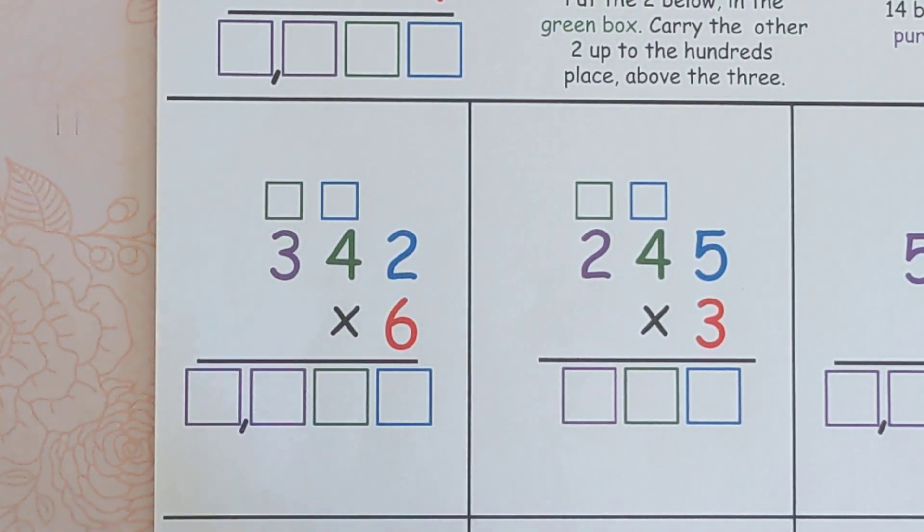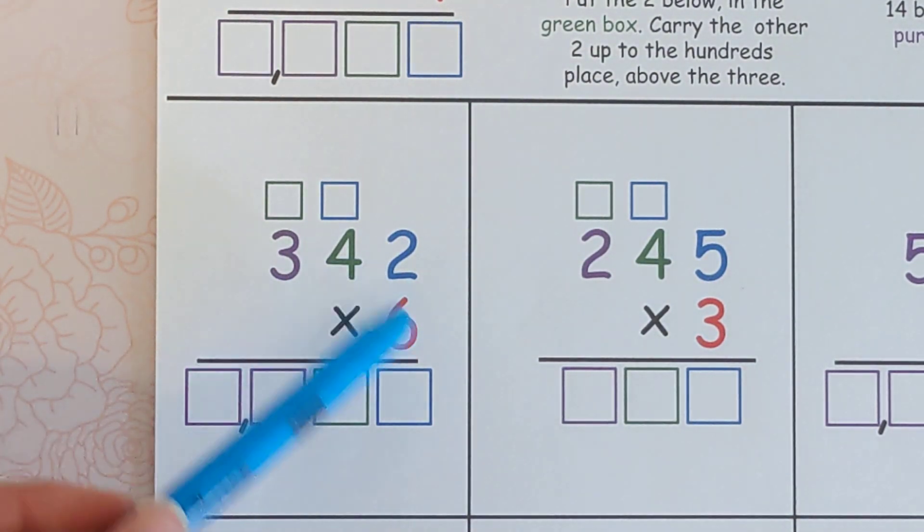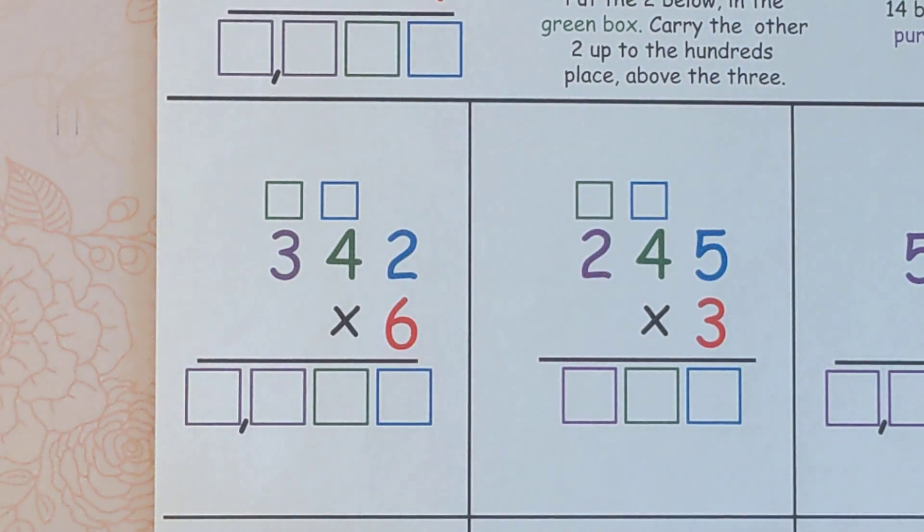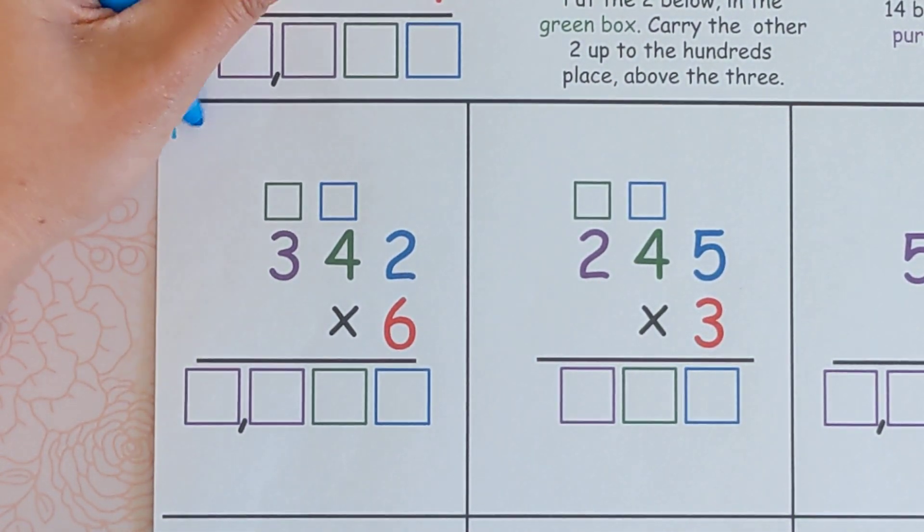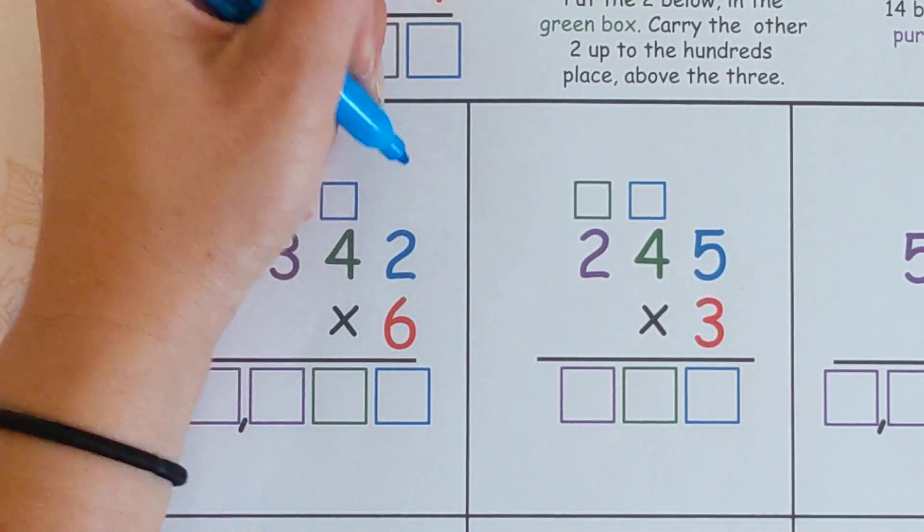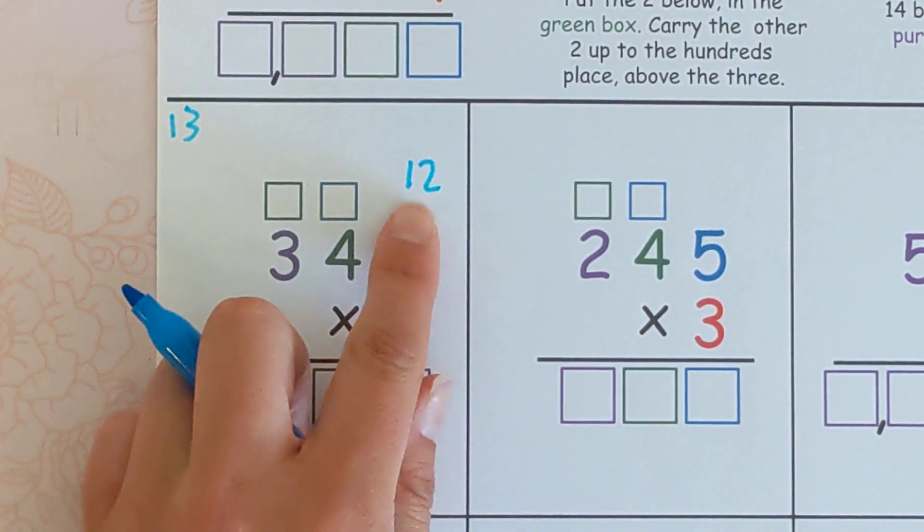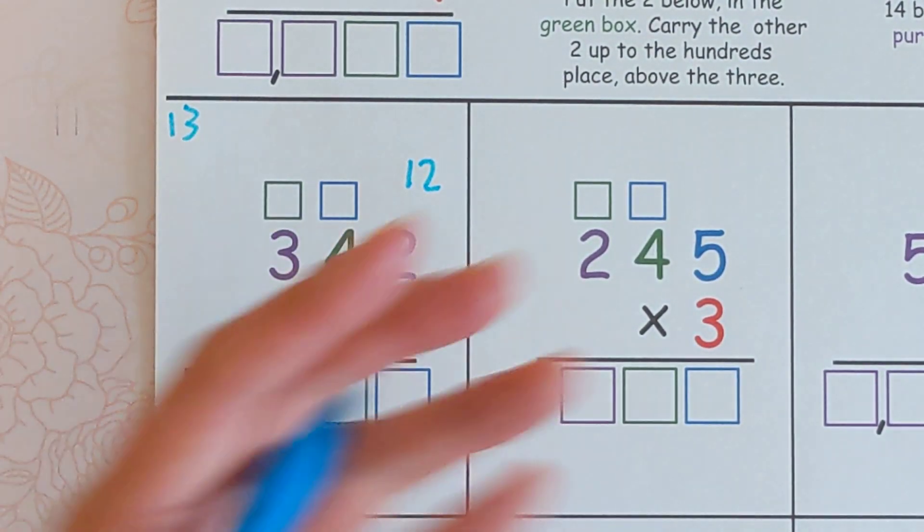So we'll start with this one here. We're going to do six times two, then we'll do six times four, and then we'll do six times three. So six times two is 12, and we are going to carry the one just like we would in a smaller problem.